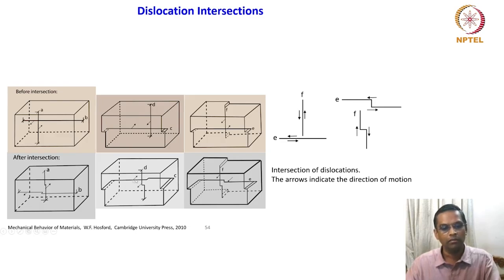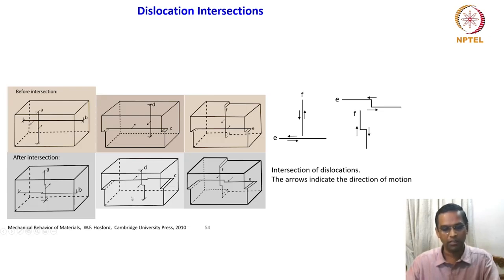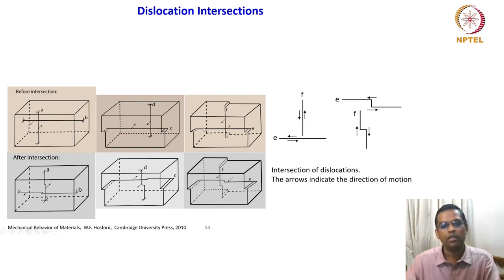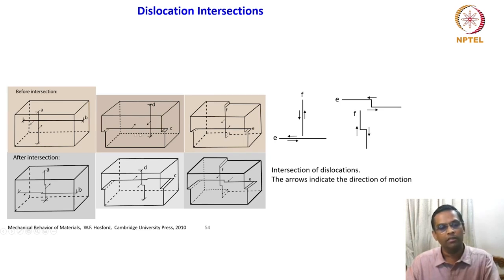The jog will move in one direction or another depending upon the force. The result of the intersection is shown here — the line is still moving in that direction and this line is moving in the other direction. The third case is quite different. A screw dislocation is created here, and there is another screw dislocation perpendicular to this unit side. Dislocation lines E and F are in a very different situation as compared to A, B, C, and D.